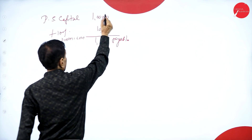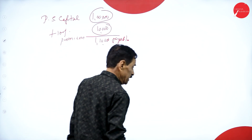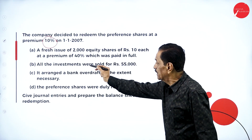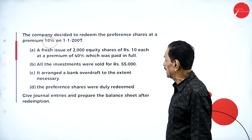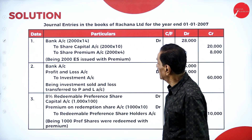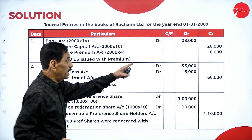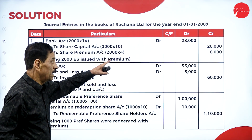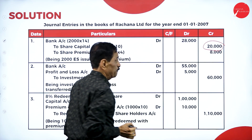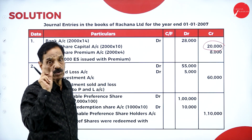For this purpose the company has issued a fresh issue of two thousand equity shares, each at a premium of forty percent, for the purpose of redemption. The journal entry: Bank Account Dr. 28,000 (two thousand shares at fourteen rupees each); to Share Capital 20,000; to Share Premium 8,000.